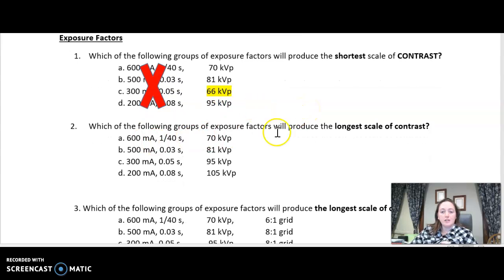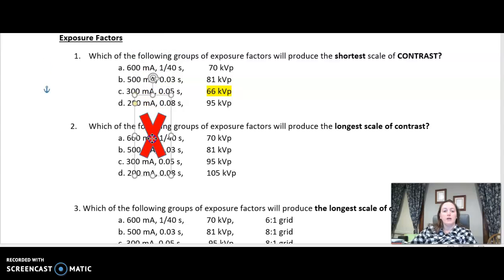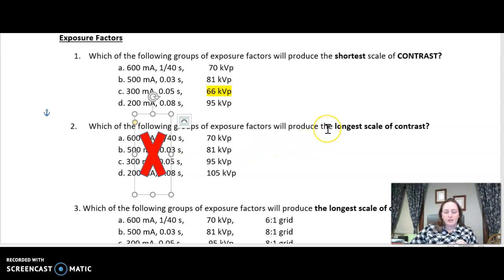Question two is asking me now for the longest scale of contrast, so we're going in the opposite direction. Again, I have MA and time selections. Do those have any effect on my contrast? No, absolutely they do not. So ignore it. Put your X there. Just pretend it doesn't exist. Long scale of contrast. Remember, long scale is your big elephant. Do you want high KVP or low KVP? Well, if you said high KVP gives me long scale of contrast, you would be correct. So looking at these four options, the 105 KVP is the highest option that you have, and that gives you the longest scale of contrast.